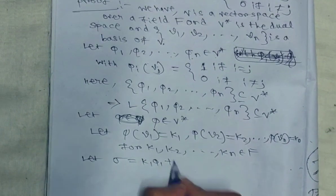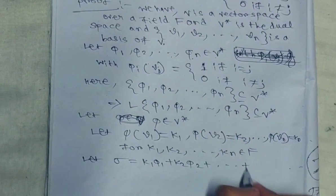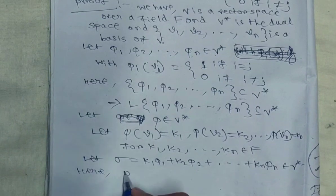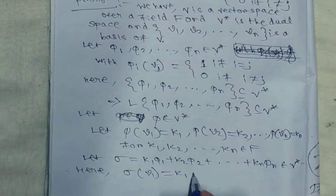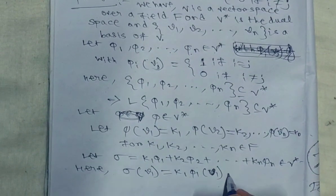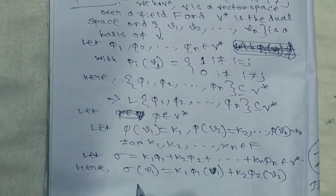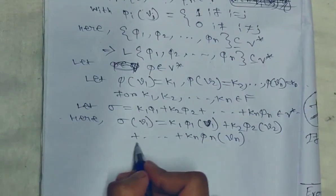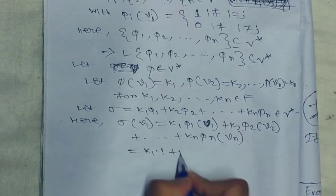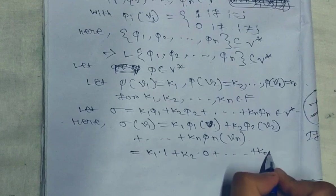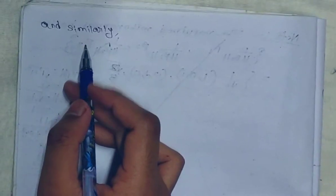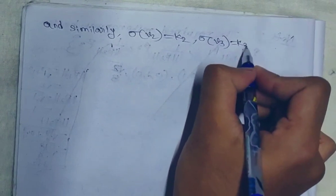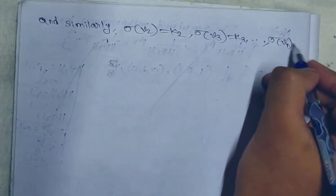Let σ = k1φ1 + k2φ2 + ... + knφn, belonging to V*. Then σ(V1) = k1·φ1(V1) + k2·φ2(V1) + ... + kn·φn(V1) = k1·1 + k2·0 + ... + kn·0 = k1. Similarly, σ(V2) = k2, σ(V3) = k3, ..., σ(Vn) = kn.